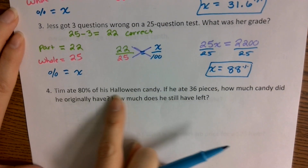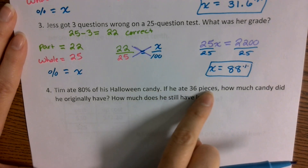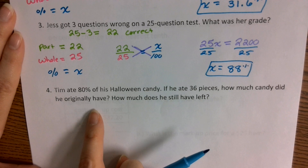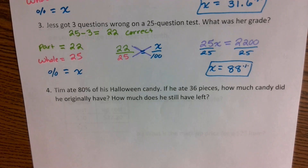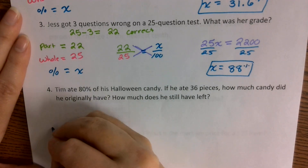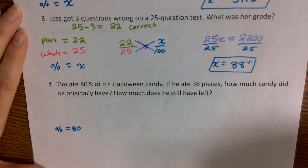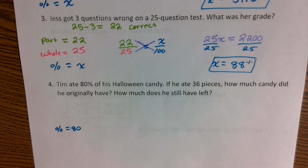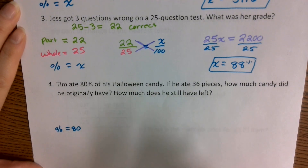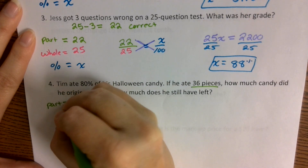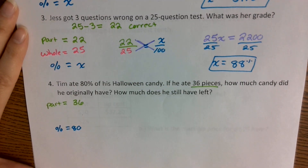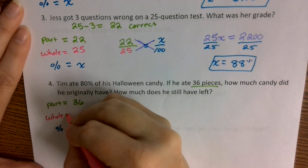Problem number four: Tim ate 80% of his Halloween candy. If he ate 36 pieces, how much candy did he originally have, and how much does he still have left over? He ate 80% — that's our percentage. Does 36 represent the part or the whole? He ate 36 pieces, but he didn't eat everything. We don't know how much candy he originally had, so 36 represents our part. The whole is what's missing — that's what we're trying to identify.